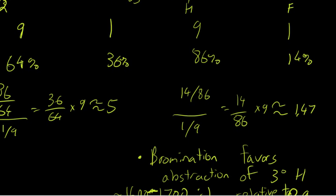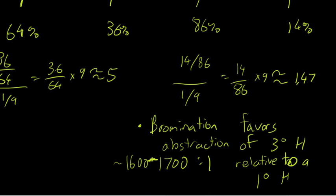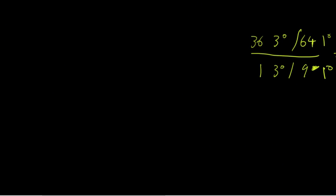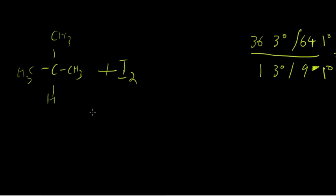What about iodination? Iodine — the reaction is so endothermic that we don't even consider it as taking place. If you see this reaction with iodine, you can just say: no product. This reaction mixture will just sit there even if you irradiate it with UV light, so we assume iodination of alkanes does not take place.